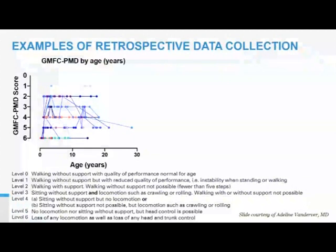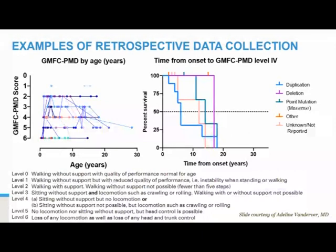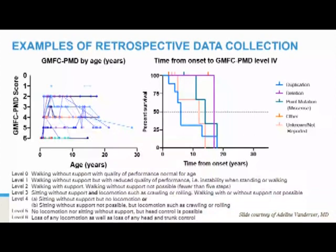Here you'll see some outcomes following patients longitudinally over time, looking at gross motor function. The gross motor functional classification tool for PMD ranges gross motor abilities from zero, which is normal performance for age, to six, which is loss of any ambulation or locomotion as well as loss of any head and neck control. There's a lot of stability — not necessarily gains or losses in PMD, but relatively stable. On the right, you'll see the time from onset of clinical symptoms to a gross motor functional classification score of four, which is loss of ambulation. Duplications tend to lose ambulation earlier than some of the later mutations.